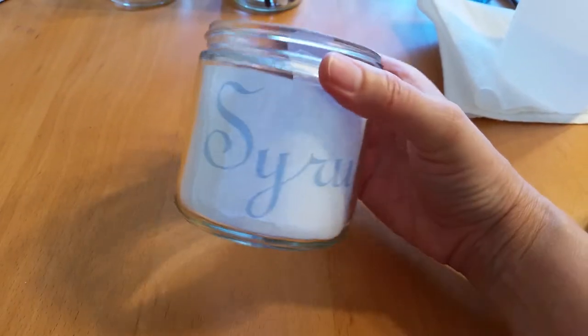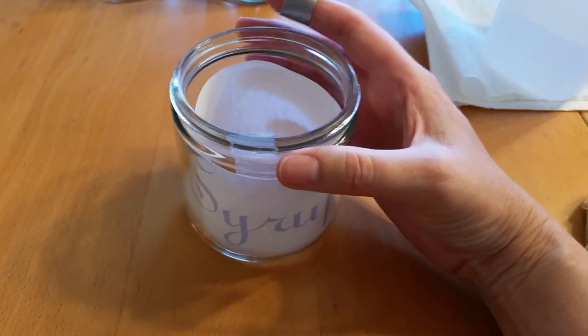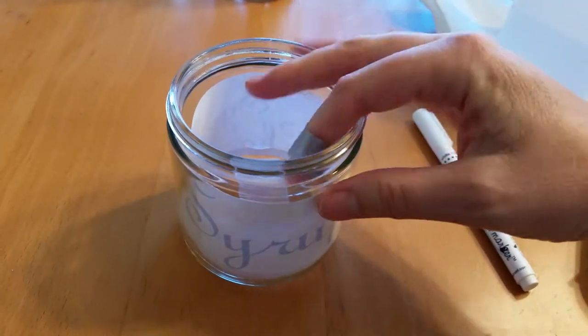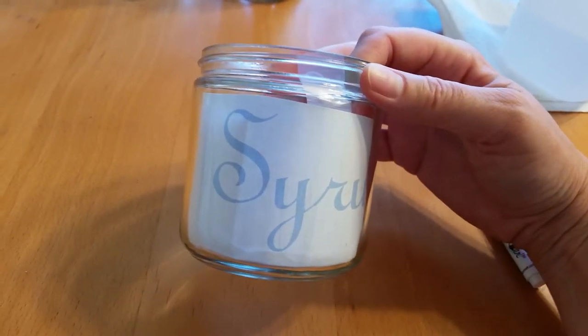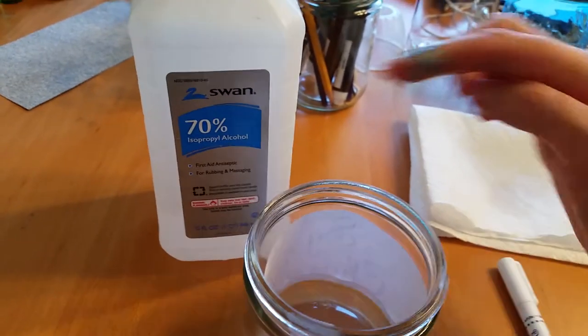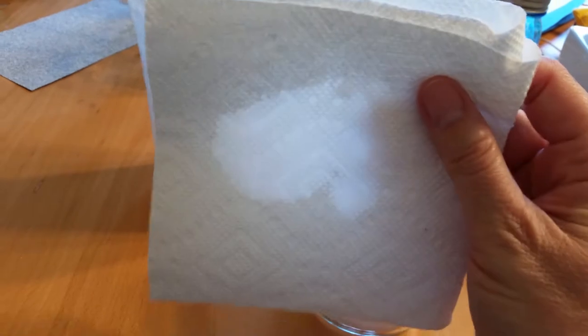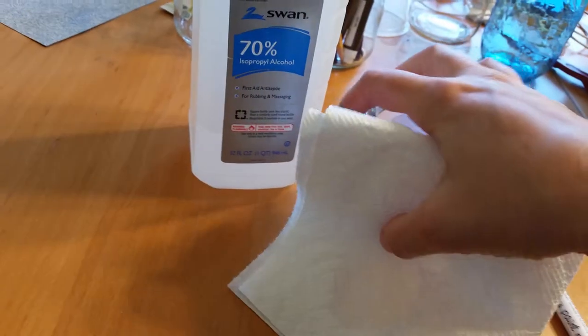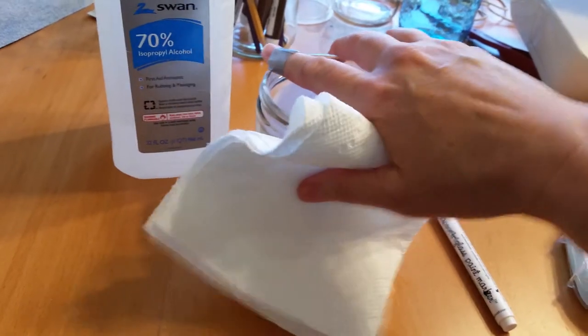But first, I need to wipe it with rubbing alcohol so that it removes grease from my hands from just now applying this label, and any soap residue that's on there. I'm using 70% rubbing alcohol, and then just wipe that. I have it on this paper towel, you can see, and then I wipe that paper towel on there.